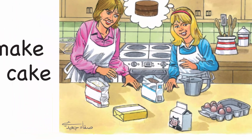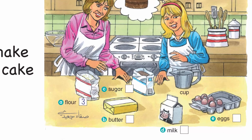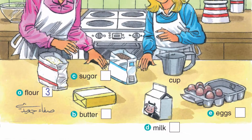To make a cake. What do we need? We need three cups of flour and one cup of sugar. How much milk? One cup of milk. How many eggs? We need four eggs. Anything else? Butter. We need one cup of butter.